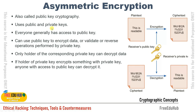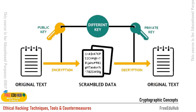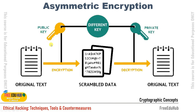In asymmetric encryption, a plain text is encrypted using the receiver's public key to create ciphertext. The receiver then uses their private key to decrypt the message, making it available in clear format. The public key encrypts the data, and the private key on the receiver's side decrypts the scrambled data.